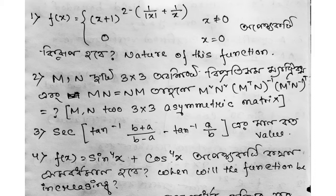Also, m and n are 3×3 symmetric matrices and mn equals nm. Find the value of (m² n²) and the related function — what will it equal?